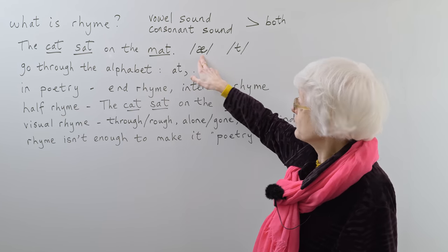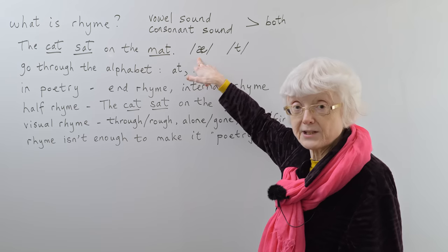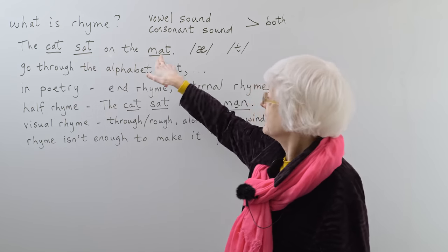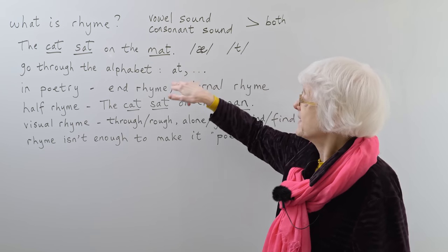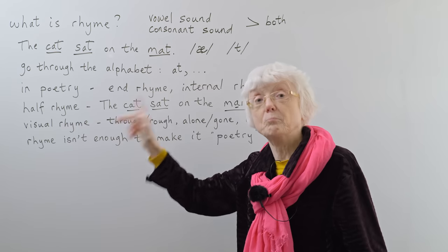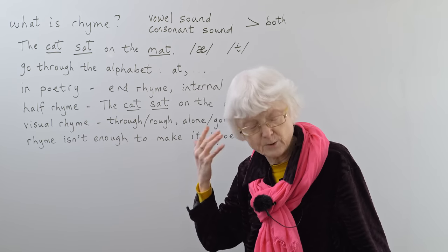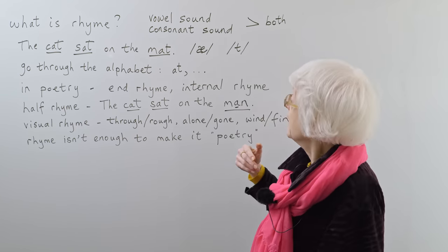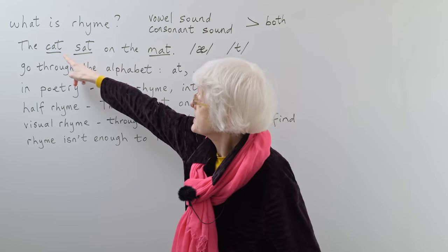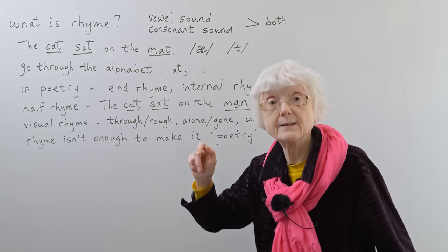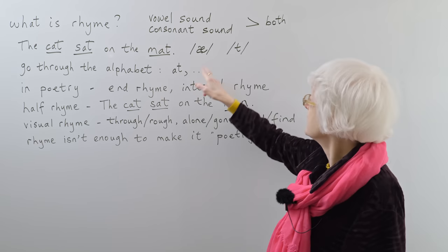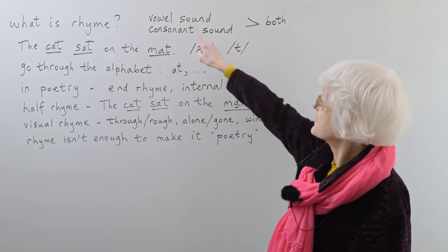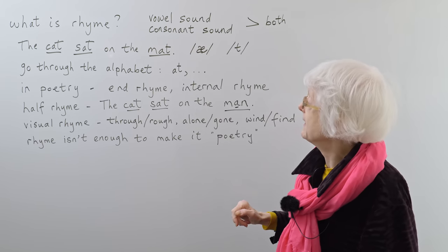So we've got A. This is the phonetic symbol for the A sound in these three words, the letter A. Cat sat mat. You can tell that you can hear that those rhyme. But also, the T at the end has to be there as well. Cat sat mat. So two things, vowel and consonant.